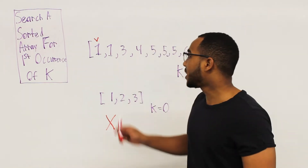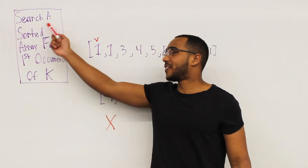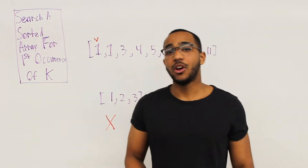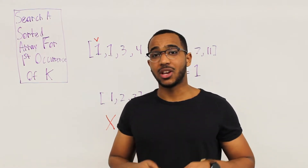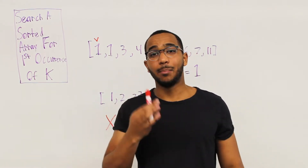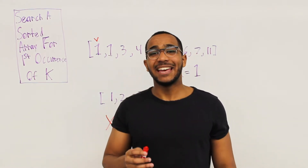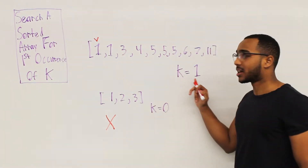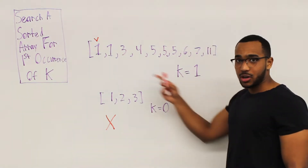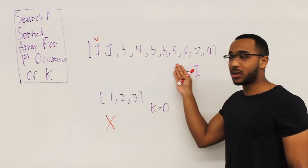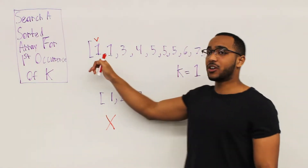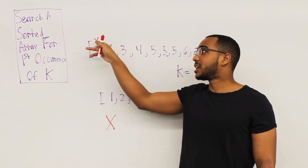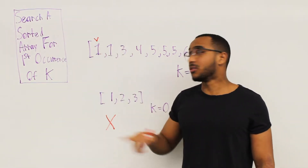In this video we are going to investigate how we search for the first occurrence of a number k in a sorted array. Here k is 1, the array is sorted. The first occurrence of 1 in the sorted array is right here at index 0.